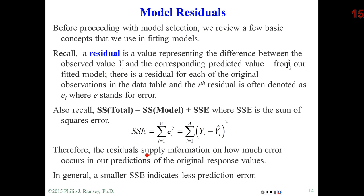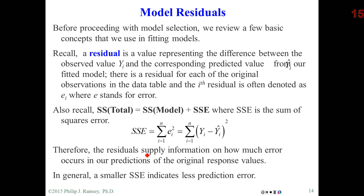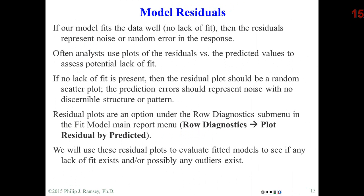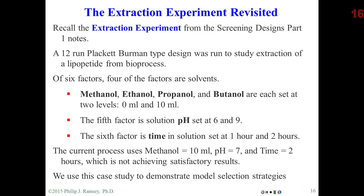Finally, in looking at models, we consider the residuals — just the difference between the actual and the predicted. If our model fits well, the residuals are random noise and scatter. If we under-fit and we have bias, you'll typically see a pattern in those residuals. You can get residual plots in JMP in the fit model dialog window — under the main report menu, go to row diagnostics, plot residual by predicted. So at this point, we're going to take this idea of modeling and start applying it to the extraction experiment.